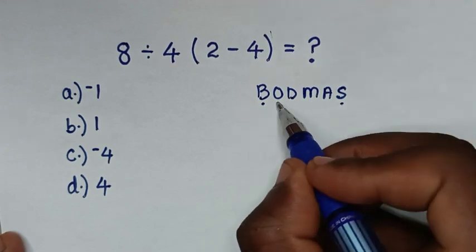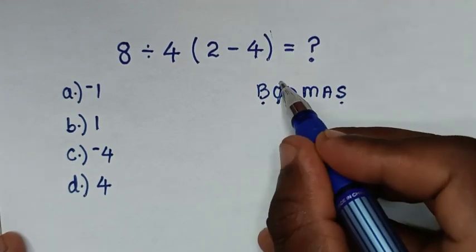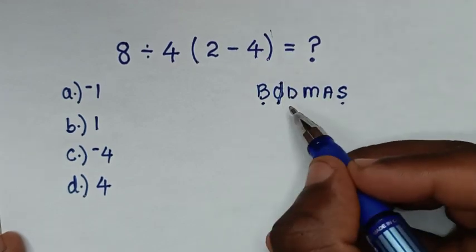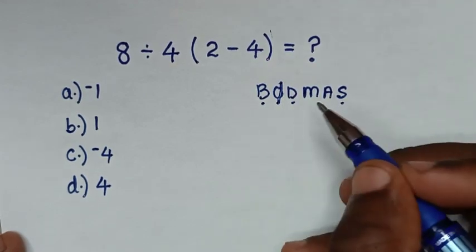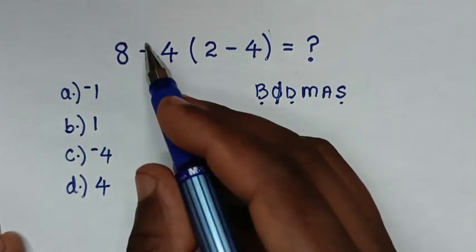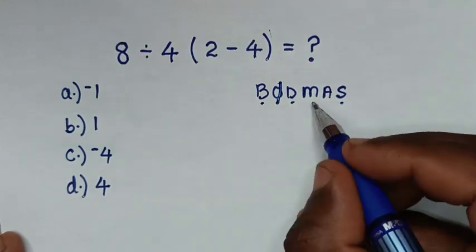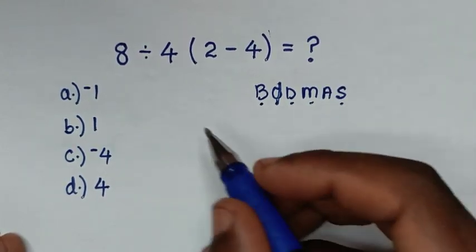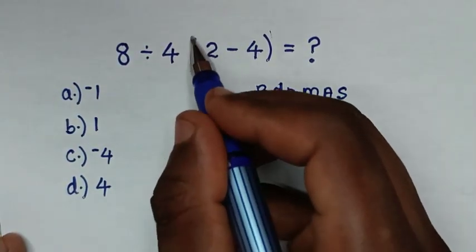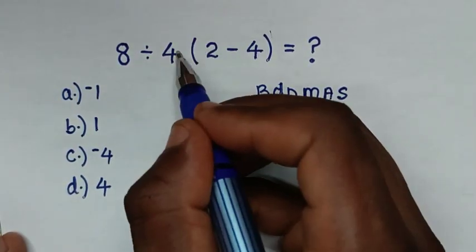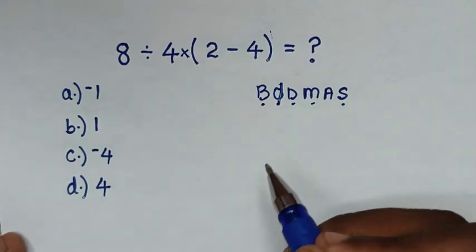And O is order — we don't have order or exponents. D is division — we have division here. M is multiplication — between this bracket and 4, in here we have multiplication.